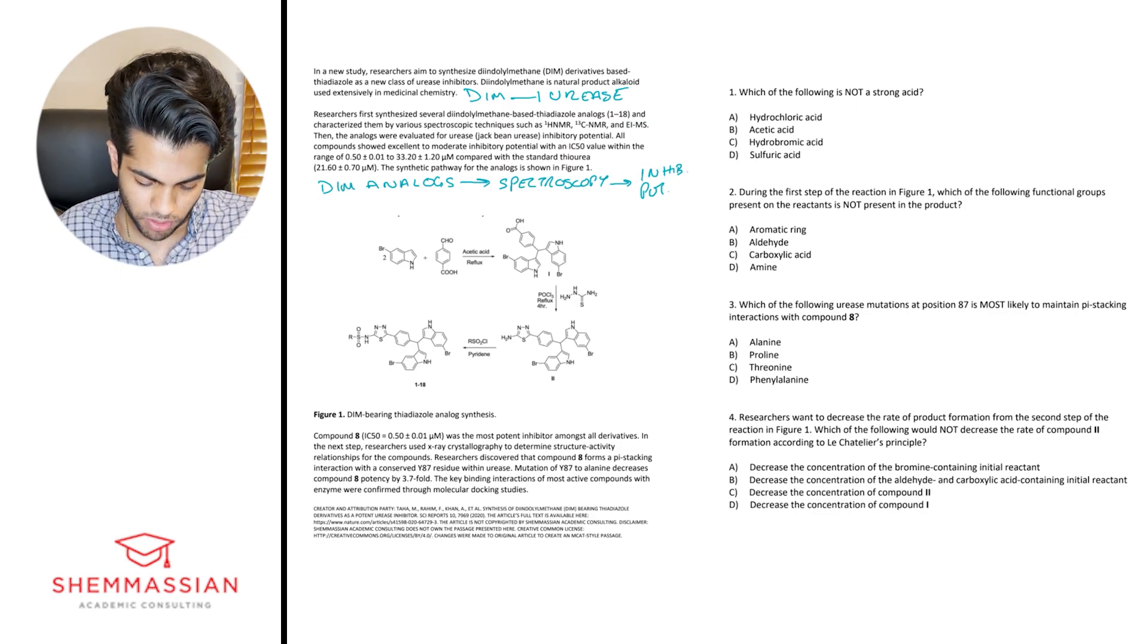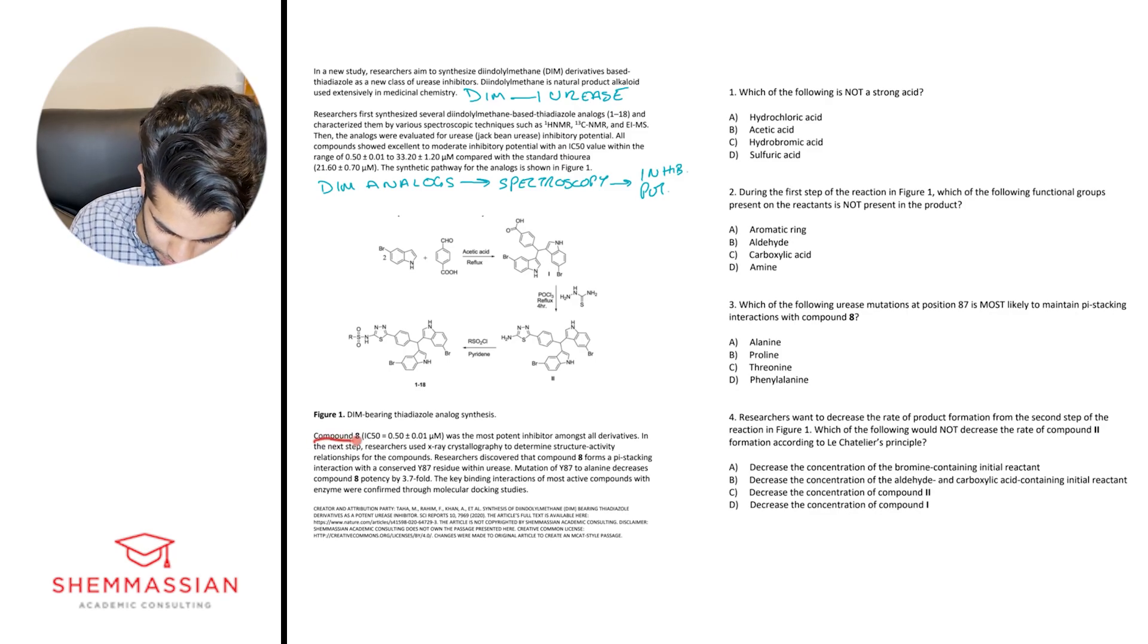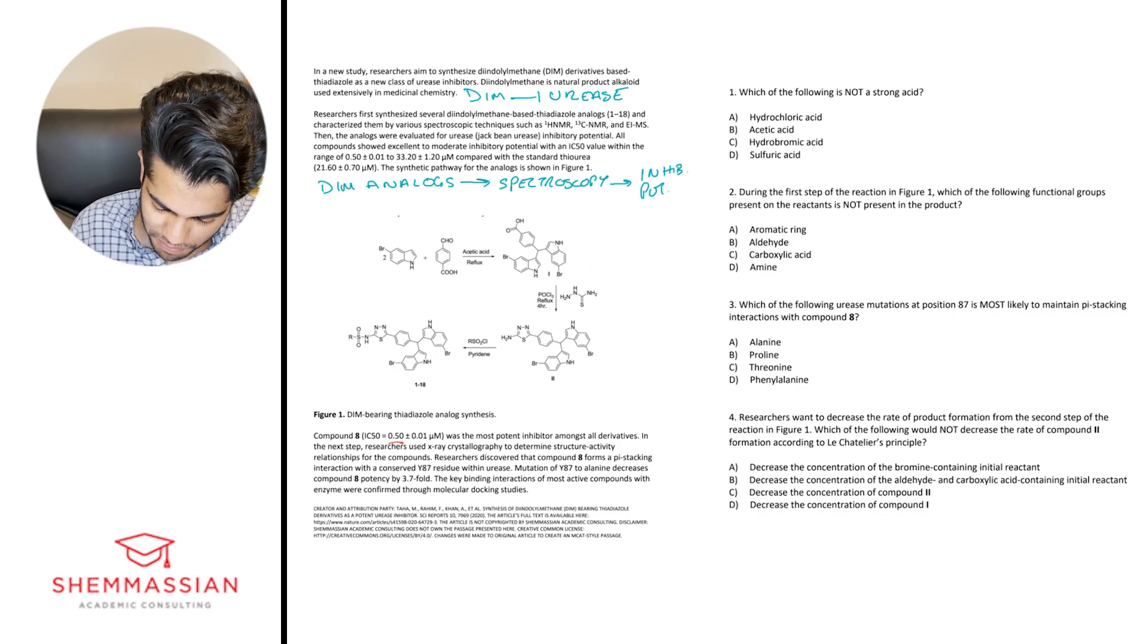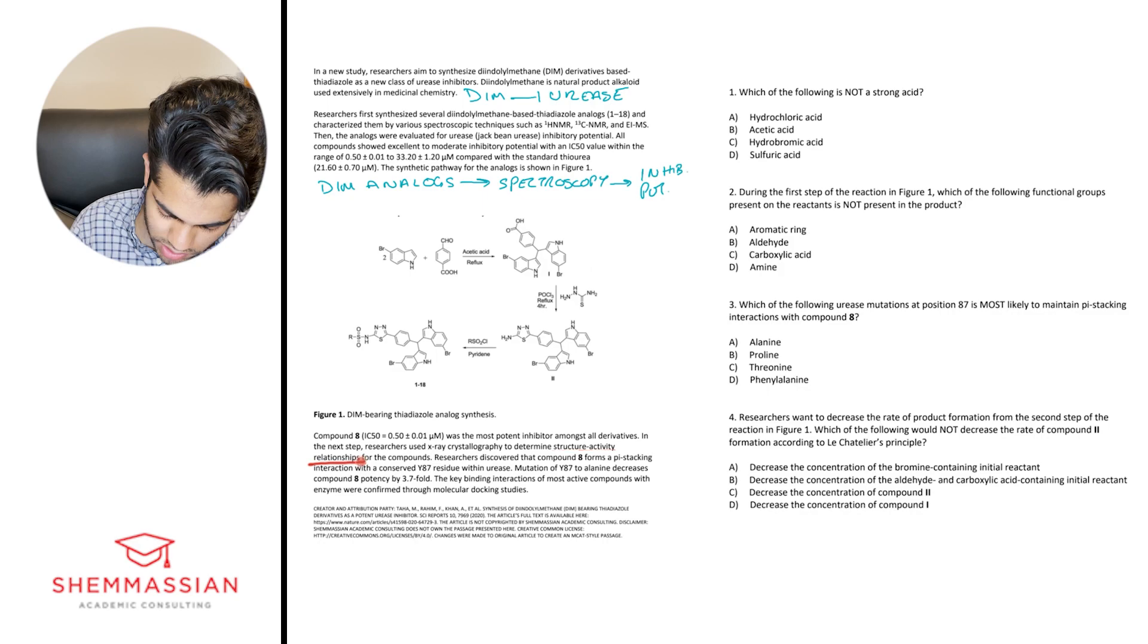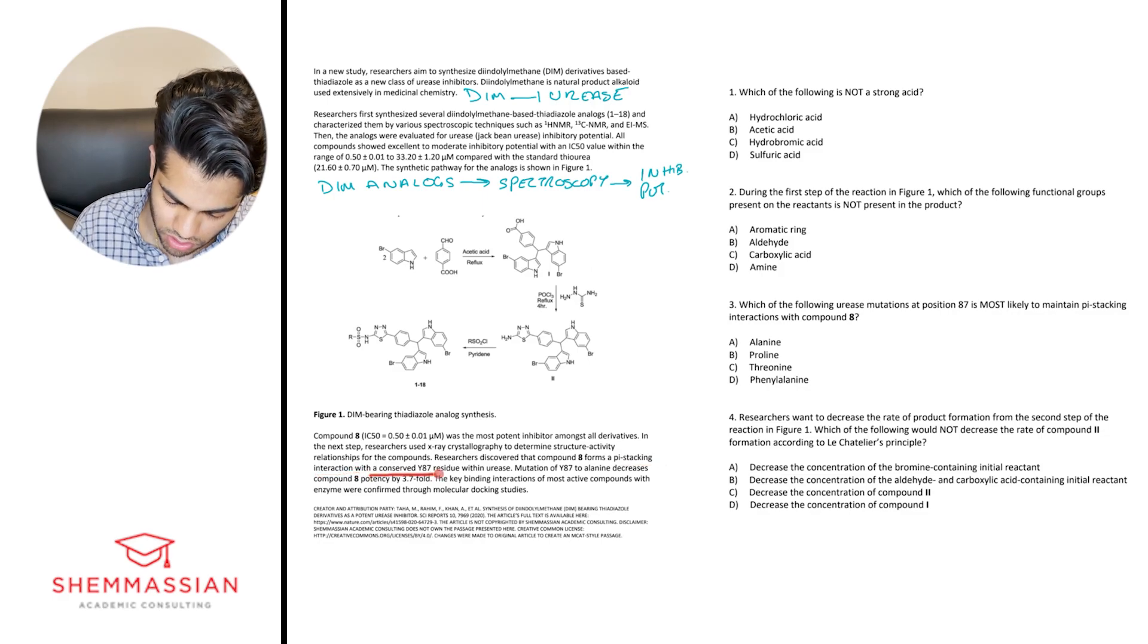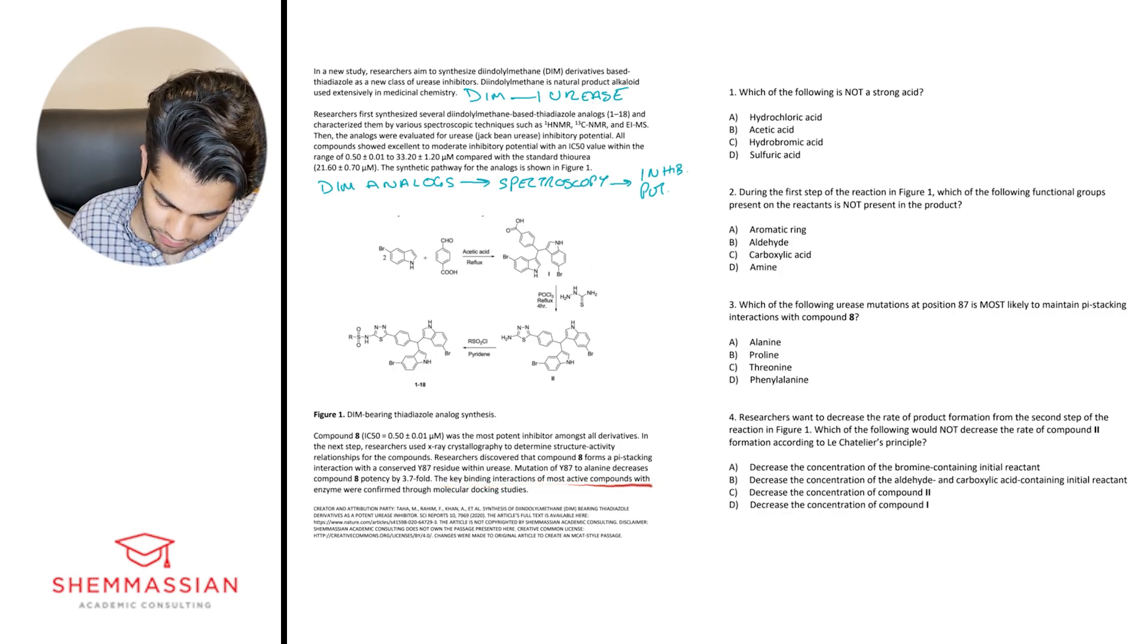Alrighty. And so I like that as my outline for paragraph two. So let's go ahead and go to paragraph three. Compound eight, and in parentheses, they give us IC50 equal to 0.5 plus or minus 0.01 micromolars, was the most potent inhibitor amongst all derivatives. In the next step, researchers used x-ray crystallography to determine structure activity relationships for the compounds. Researchers discovered that compound eight forms a pi stacking interaction with a conserved Y87 residue within urease. Mutation of Y87 to alanine decreases compound eight potency by 3.7 fold. The key binding interactions of most active compounds with enzyme were confirmed through molecular docking studies.